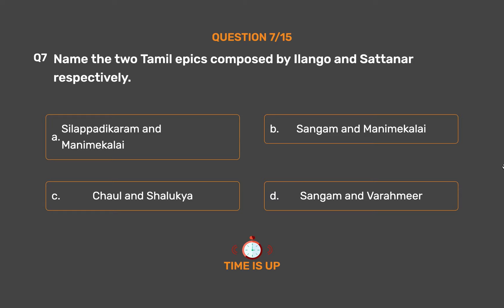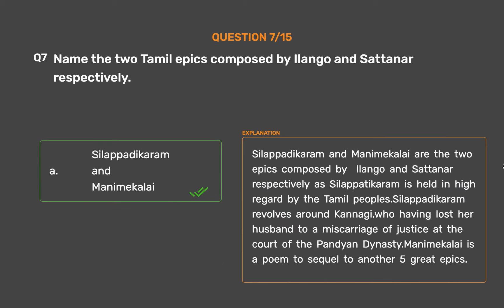The correct answer is Option A: Silappadikaram and Manimeklai. Silappadikaram is held in high regard by the Tamil people. It revolves around Kannagi, who, having lost her husband to a miscarriage of justice at the court of the Pandyan dynasty. Manimeklai is a poem sequel to another five great epics.